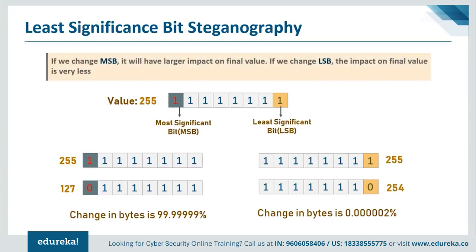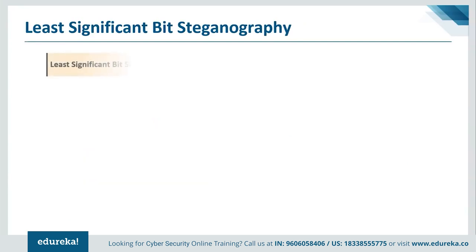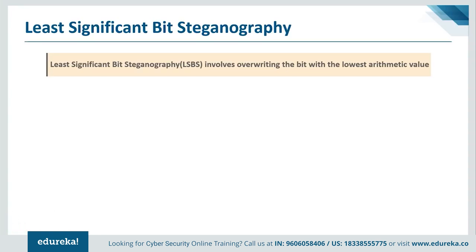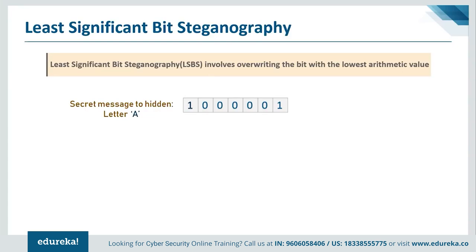This is the key insight used by LSB steganography: changing the LSB has very little impact on the final value. In this method, the least significant bit of each pixel in an image is replaced with a bit from the secret message. This alters the original output very slightly, so the cover image and stego image look exactly the same. Consider a simple example: suppose we want to insert the letter 'A' into an image. The binary representation of 'A' is 01000001. Since we're using an RGB color model with 8 bits per value, we need about three consecutive pixels — nine bytes — to replace all the least significant bits with the bits of letter 'A'.